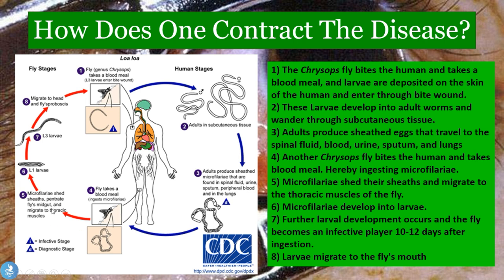From there, the microfilaria shed their sheaths and migrate to the thoracic muscles of the fly. They then develop into larvae, with further larval development occurring in the fly. The fly becomes infective after 10 to 12 days. The larvae migrate to the fly's mouthparts, allowing it to bite another human and infect them. This is how the cycle continues — a vicious cycle between flies and humans.